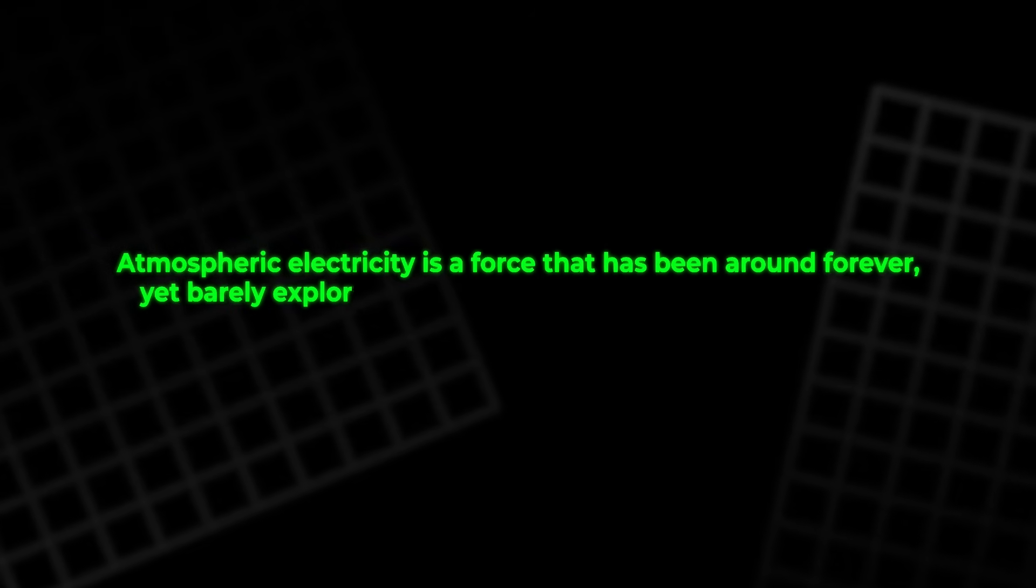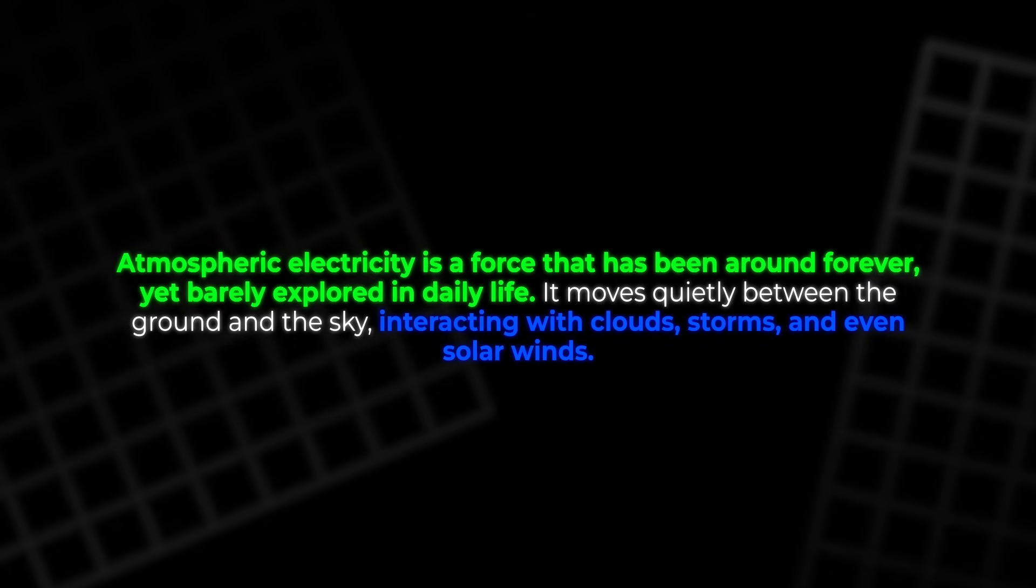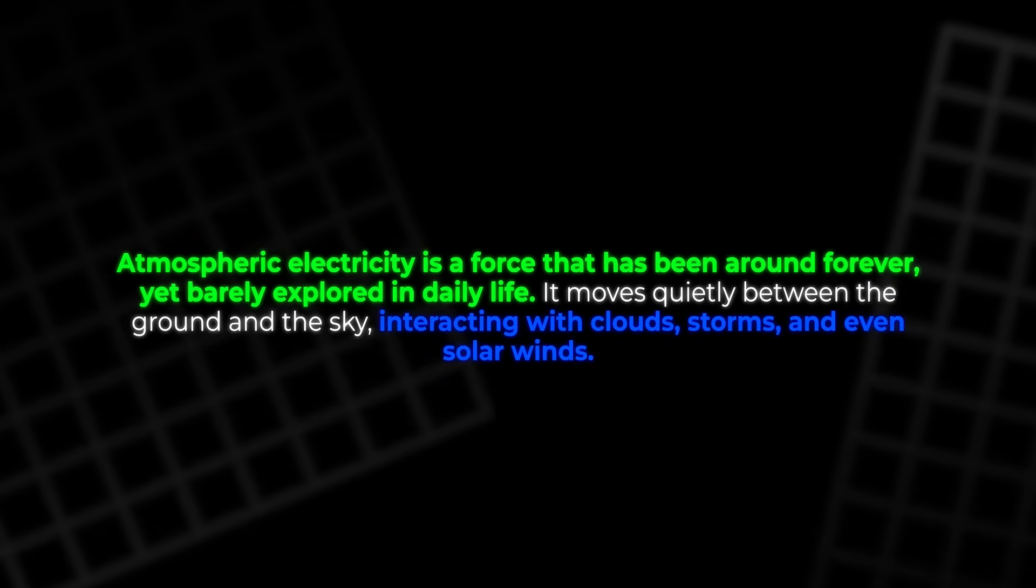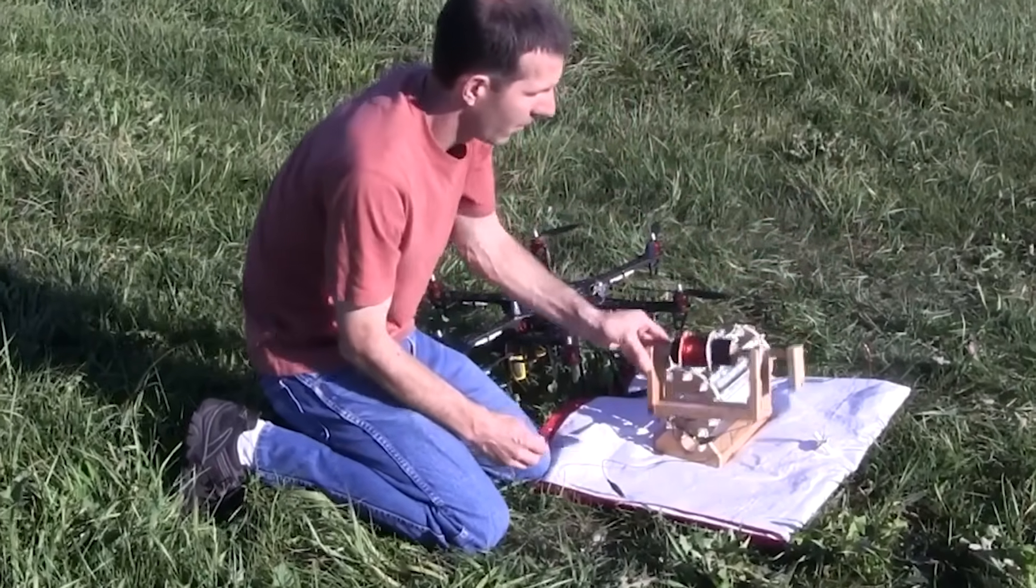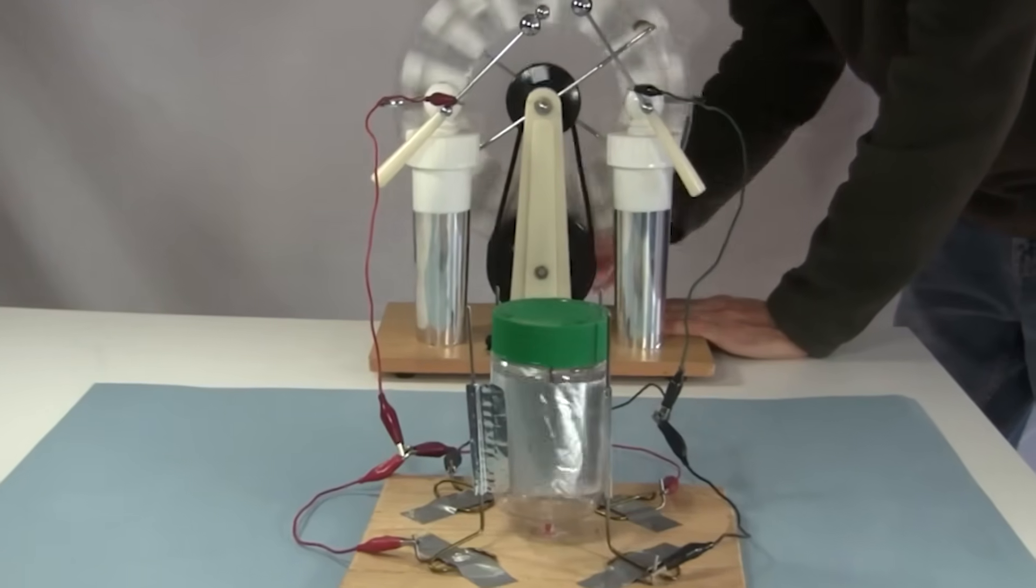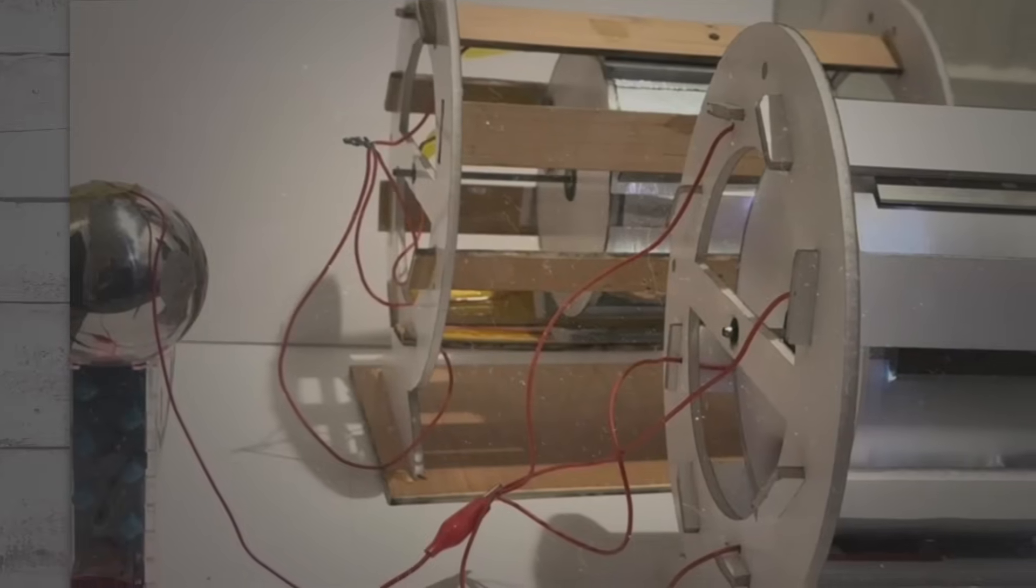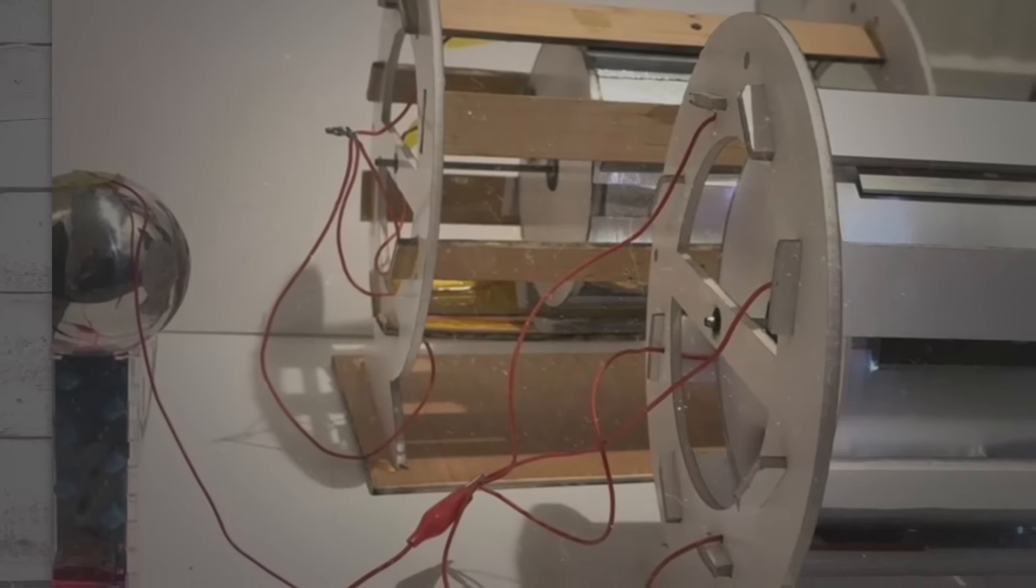Atmospheric electricity is a force that has been around forever, yet barely explored in daily life. It moves quietly between the ground and the sky, interacting with clouds, storms, and even solar winds. For decades, people believed it was too diffuse to use. But modern tools, high-voltage knowledge, and better materials show that it can indeed be tapped. This motor is one example. It shows that a simple, well-arranged set of rods and foil can turn invisible charge into real, physical motion. And the quiet spinning of the drum suggests something larger. That clean and natural energy might be hiding in places most people never expect.